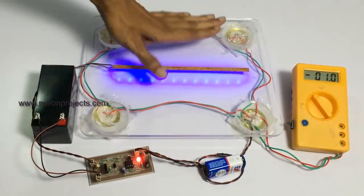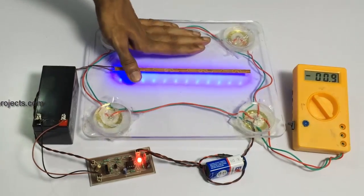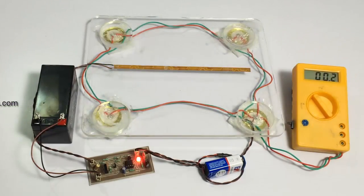The voltage generated, as you can see, is displayed on the multimeter. It is going up to 30 volts.